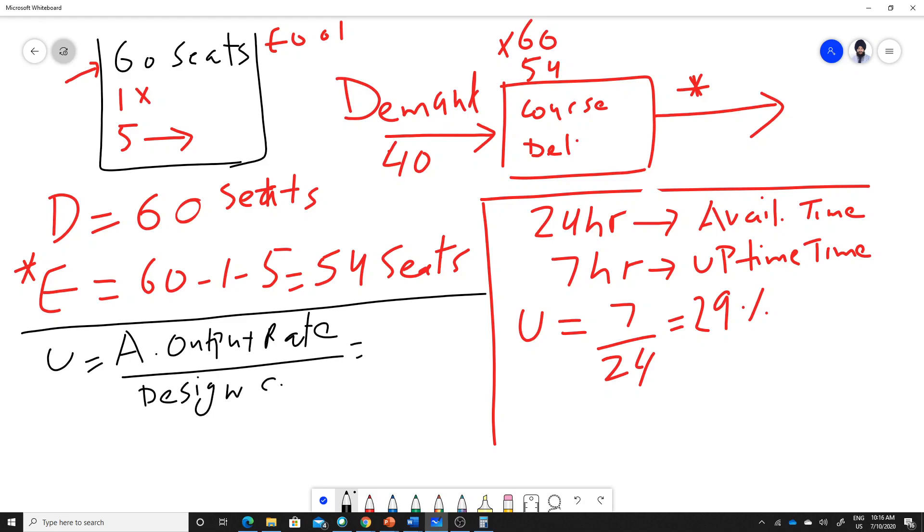For this particular course, we have the actual output rate of 40 students, given that everybody is attending the class. So 40 divided by 60 is around 66.7%.